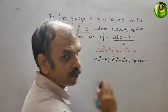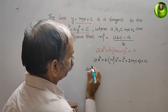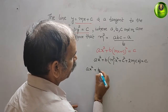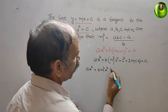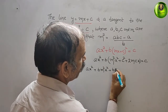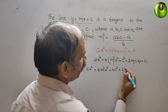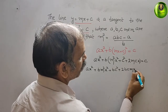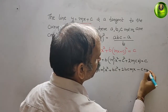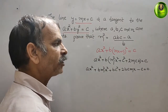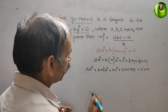Solving this, we get ax² + bm²x² + bc² + 2bcmx = c. Bringing c to the left side gives ax² + bm²x² + 2bcmx + bc² - c = 0. Now arrange the terms by powers of x.